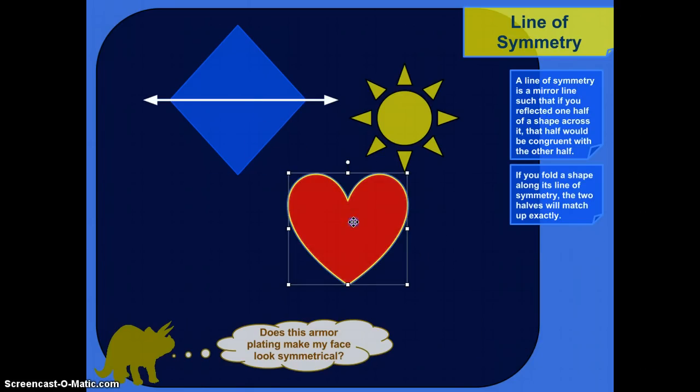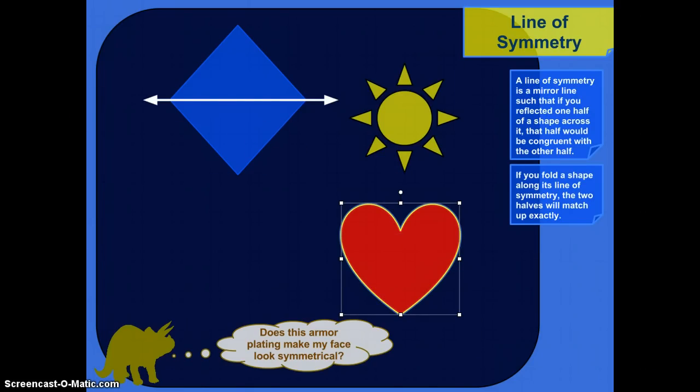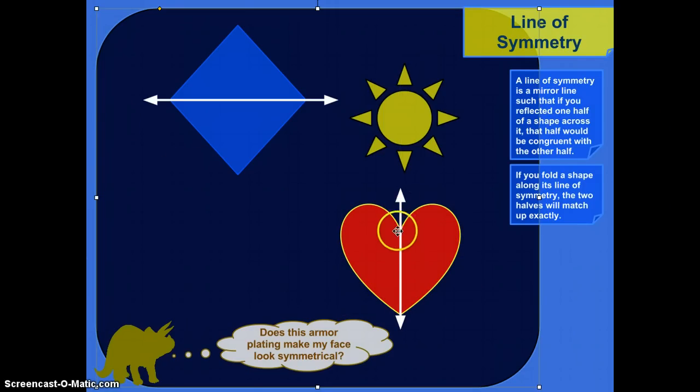What about this heart? Hearts are symmetrical. You can find a line of symmetry there. Here we go. Yeah, right there. So, if I were to fold this heart along this line, take this part and bend it over and press against that part, it would match up exactly. The two halves would look exactly the same.